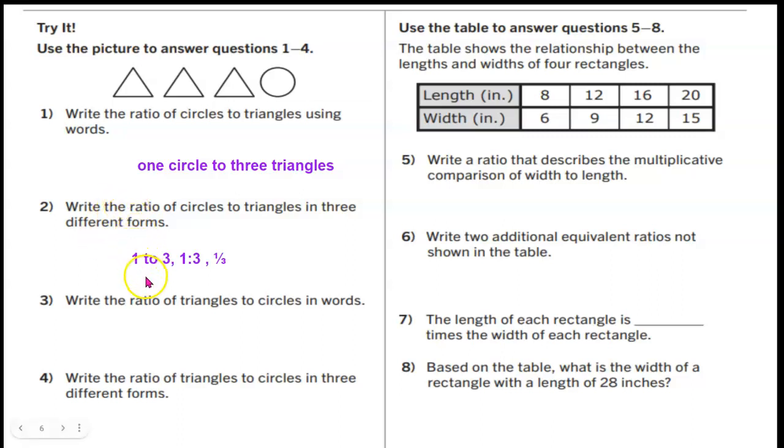In order to write the ratio of triangles to circles in words you would literally write three triangles to one circle.